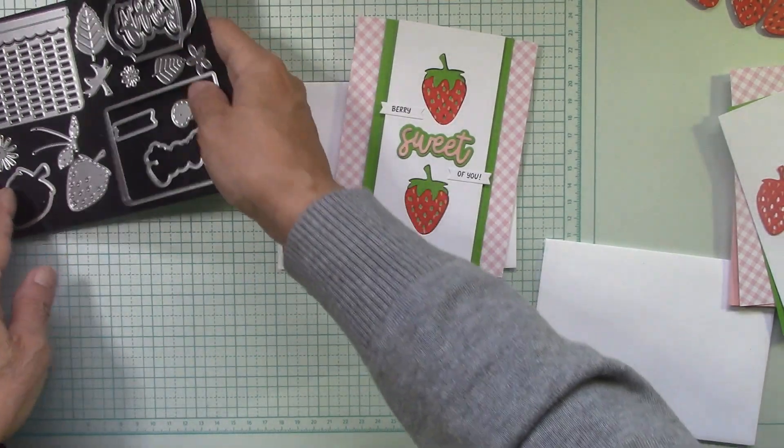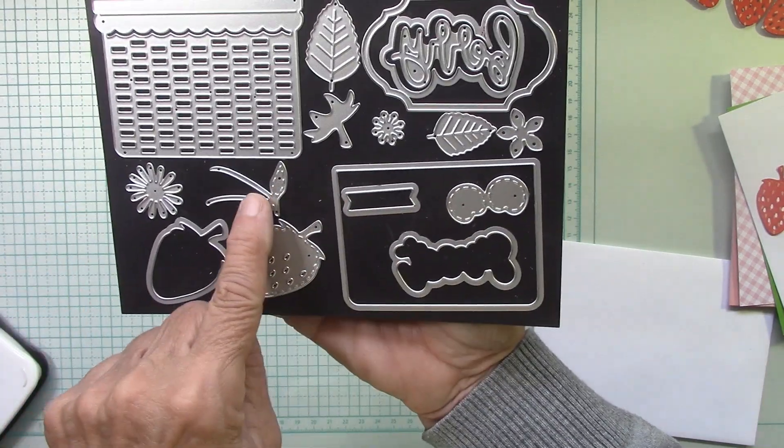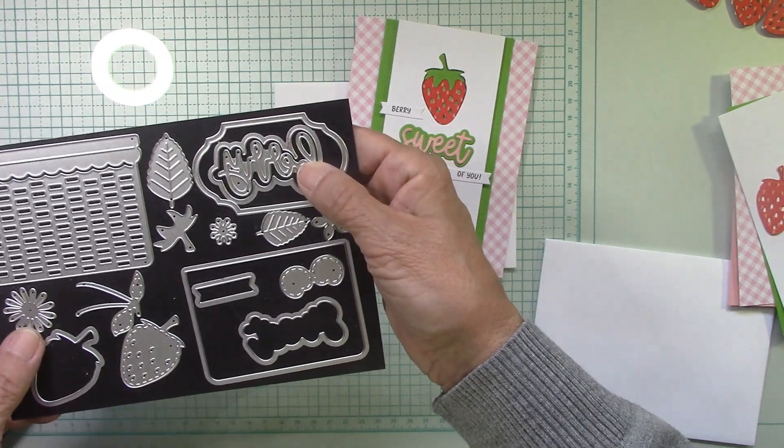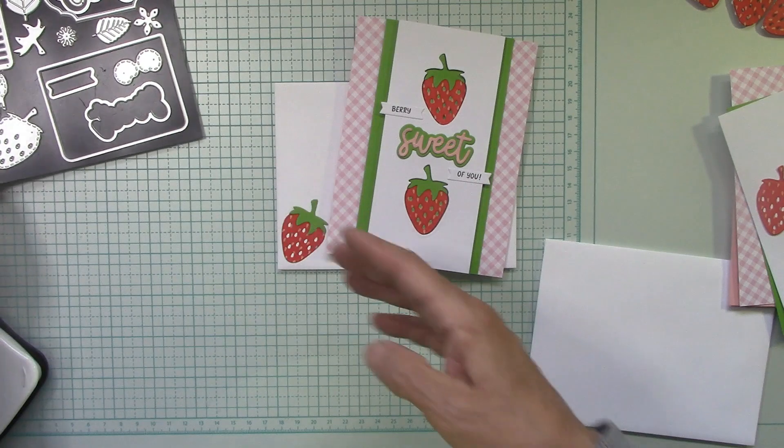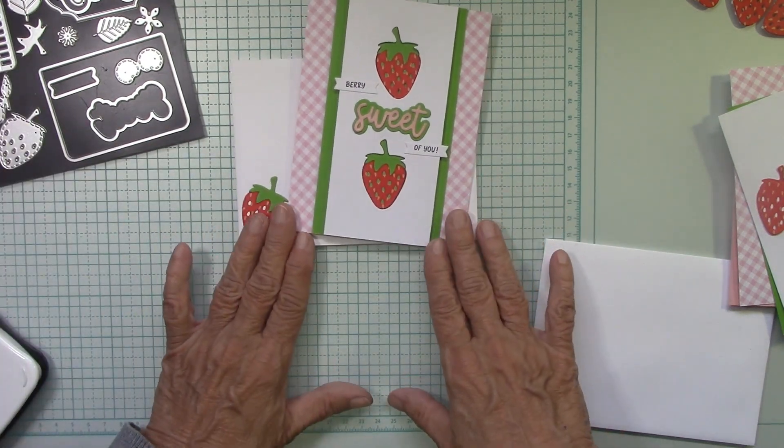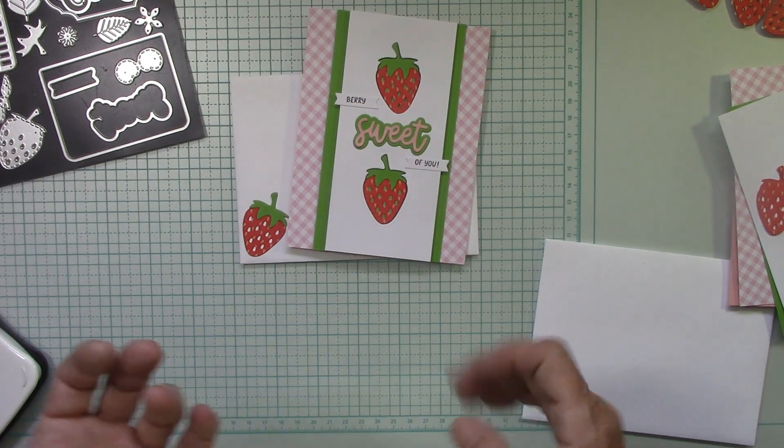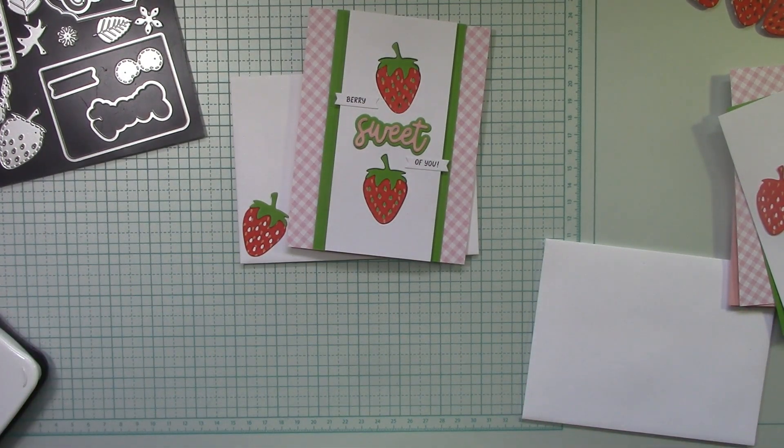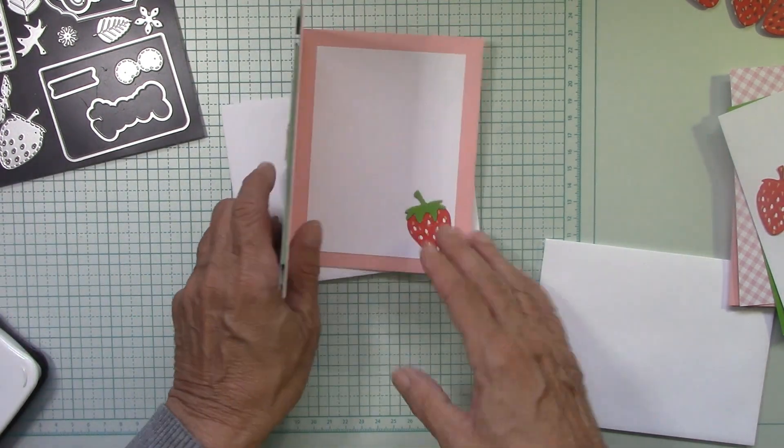So here are the dies. You get the flowers and strawberries and these little cherries. And I love that the words have a shadow die. So it's very sweet is what it is. This card I saw on the website and I've wanted to make it. So this is called copy and share everything to case a card. I'm going to show you how to make this one that was on the site.